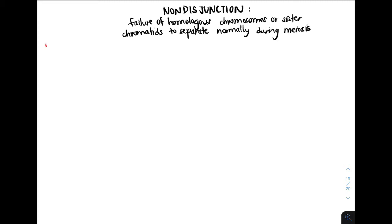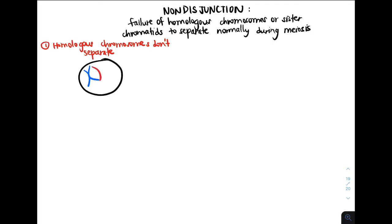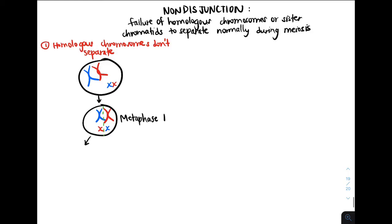So let's actually draw it out. Let's start with the failure of homologous chromosomes to separate during meiosis I. Suppose homologous chromosomes don't separate, and this is what our cell looks like in prophase I. In metaphase I, our homologous chromosomes will line up along the metaphase plate. Suppose they line up like this. When the cell splits into two different cells, suppose that this pair of homologous chromosomes does not split apart — it doesn't separate like it's supposed to.